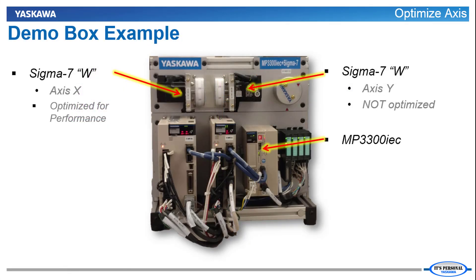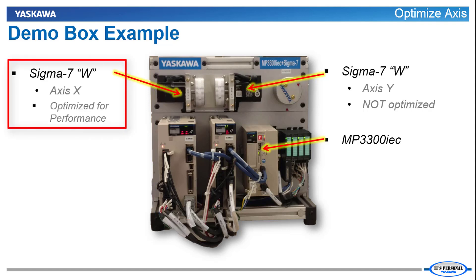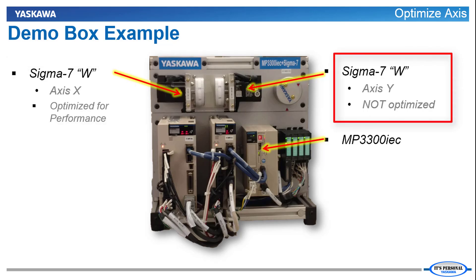Now I'd like to demonstrate the effect of the Optimize Axis feature using two motors on the standard MP3300 IEC and Sigma-7 demo. The Sigma-7W amplifier runs two identical motors with identical loads. On the left, the X axis has been optimized for performance in Hardware Configuration, and on the right, the Y axis has not been optimized.